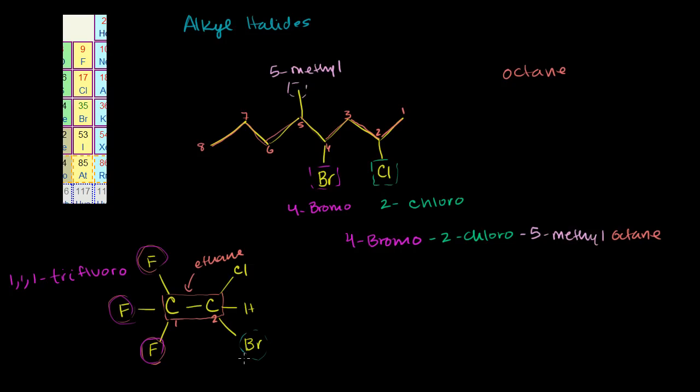And then this bromo is attached to the two carbon, so 2-bromo. And then you also have this chloro attached to the two carbon, so you're also going to have a 2-chloro. So then you go in alphabetical order: B takes precedence, then you're going to go to the C, and then the trifluoro. You ignore the tri, but F still comes after B and C. So this is going to be 2-bromo-2-chloro-1,1,1-trifluoro ethane.